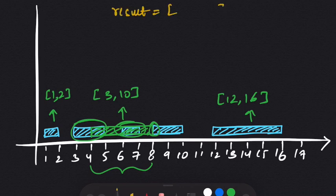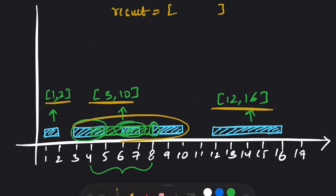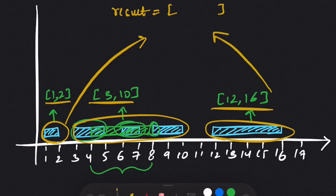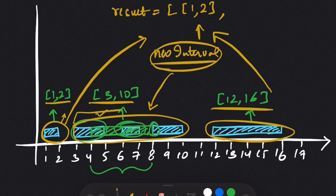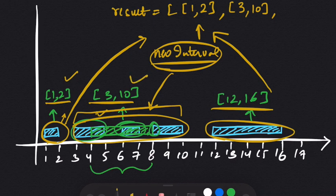We start with an empty result list and add intervals into it. Intervals that do not overlap with the new interval can be added as-is. First we append 1,2 into the result. Then we add the new interval, merging it with any overlapping intervals — the merged result is 3 to 10. Finally, since 12,16 doesn't overlap, we append it as-is. That gives us our answer.